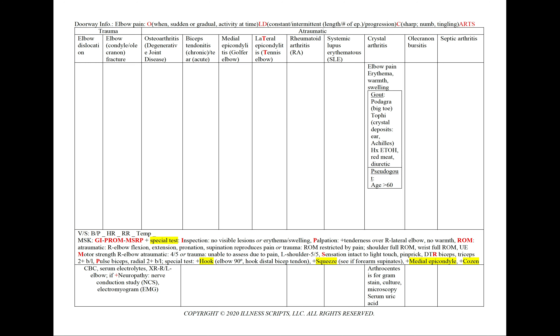In crystal arthritis, we'll find elbow pain with erythema, warmth, or swelling noted in our inspection and palpation. For gout, we could also note podagra in the big toe, or tophi crystal deposits in the ear or behind the Achilles, and a history of heavy alcohol drinking, red meat, or diuretics. Pseudogout tends to occur in an older population. We'll order arthrocentesis for gram stain, culture, microscopy, and serum uric acid.